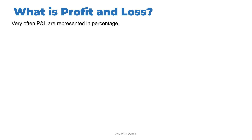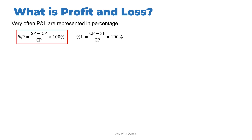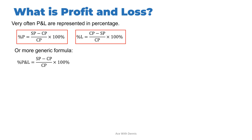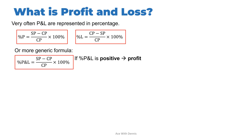Very often profit and loss are represented in percentage. The formula for percentage profit is: (selling price − cost price) / cost price × 100%. The formula for percentage loss is: (cost price − selling price) / cost price × 100%. A more generic formula: percentage of profit and loss = (selling price − cost price) / cost price × 100%. If the result is positive it is a profit; if negative it is a loss.